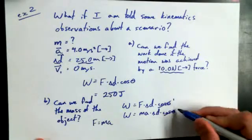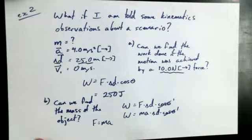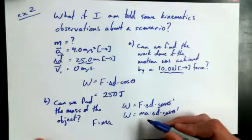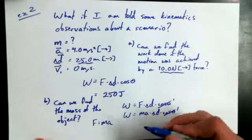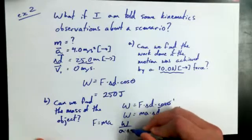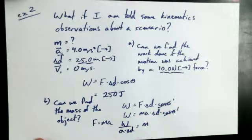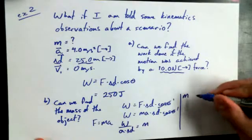Let's get rid of the cosine theta because that's going to eliminate to 1 again. So work is equal to mad then. I want to get M by itself, so I can divide both sides by acceleration and displacement. So work divided by acceleration times displacement equals the mass. I have enough information here to figure out what the mass of this object is based on the amount of work that was done and the acceleration that was observed.